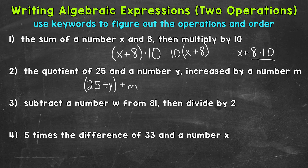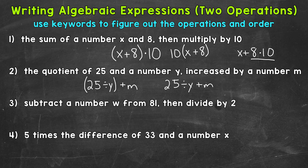We can also write this without parentheses, because due to the order of operations we need to do division before addition. So 25 divided by y plus m would be correct as well — we would do 25 divided by y first, and then add m.